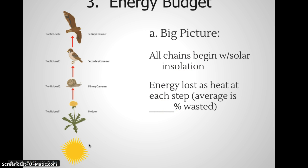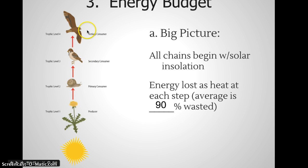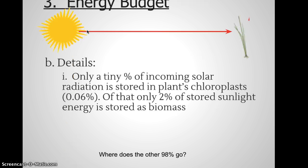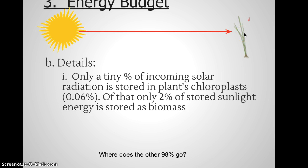All food chains begin with sunlight energy, and at each step a certain percentage is lost. About 90% is lost as heat or waste at each transfer in a food web. Now, let's think about the tiny percentage of sunlight energy that's actually reaching plants and stored in their chloroplasts. Of all the energy coming into the Earth, only about 2% is stored by the plants.